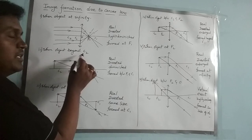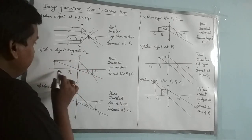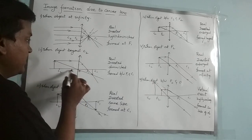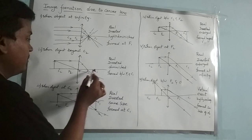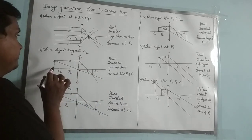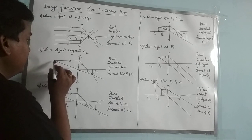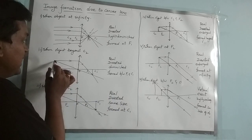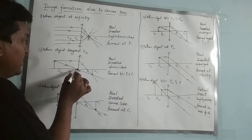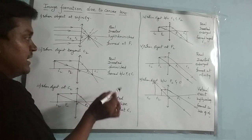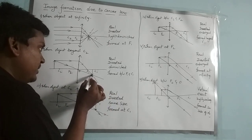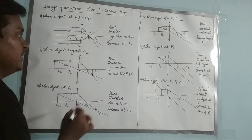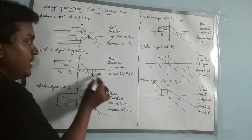Coming to the second case: when the object is beyond C2. Here we have the optical center, F2, C2, F1, and C1. When the object is beyond C2, two rays are considered. A ray parallel to the principal axis will pass through the focus, and another ray passing through the optical center will go undeviated. These two refracted rays meet at a point, and the image forms between F1 and C1.